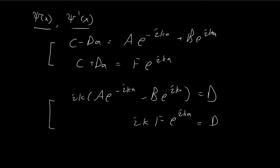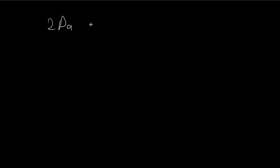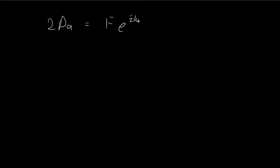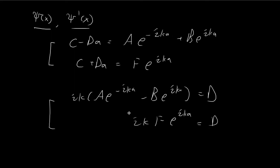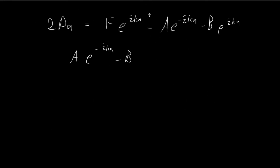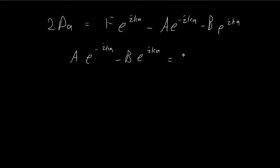Subtracting the first continuity equation from the second gives 2Da on the left. The right-hand side becomes F·e^(ika) − A·e^(−ika) − B·e^(ika). Combining this with the ψ'(x) equations — both equal to D — and cancelling the ik factor, we arrive at: A·e^(−ika) − B·e^(ika) = F·e^(ika).